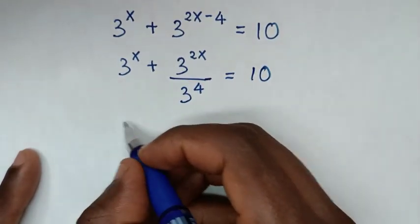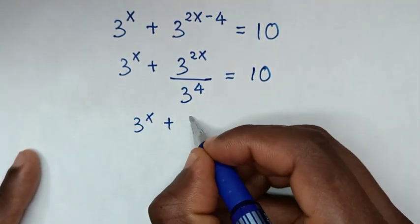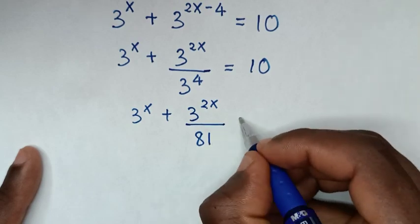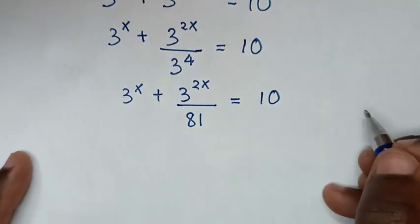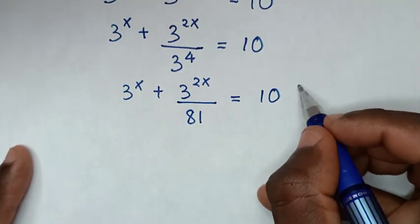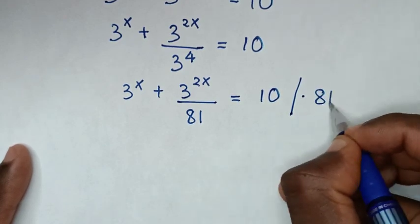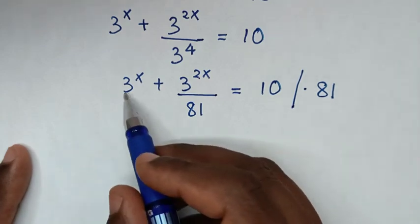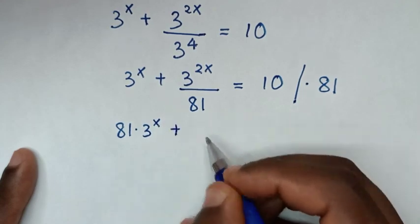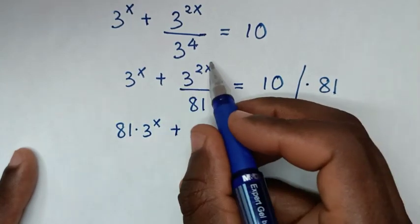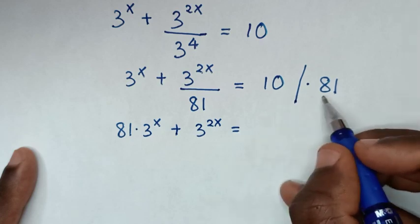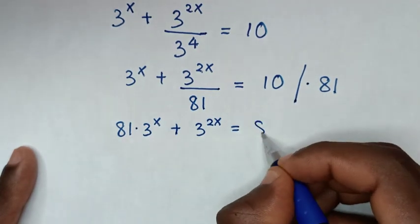Then it will be 3 power of x plus 3 power of 2x over 3 power of 4, and 3 power of 4 is 81, is equal to 10. To remove this fraction with denominator 81, we multiply the whole equation by 81. So it will be 81 times 3 power of x, plus 3 power of 2x, is equal to 10 times 81, which is 810.